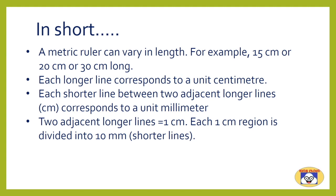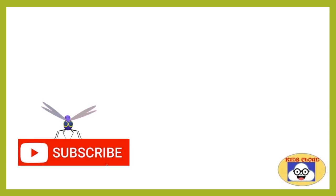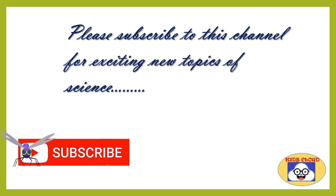Two adjacent longer lines equals 1 centimeter. Each 1 centimeter region is divided further into 10 millimeters. Thus 1 centimeter equals 10 millimeters, and 1 millimeter equals 0.1 centimeter.